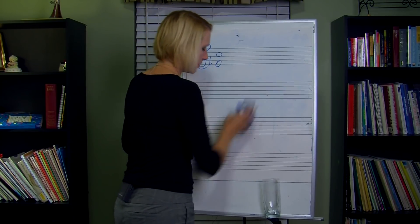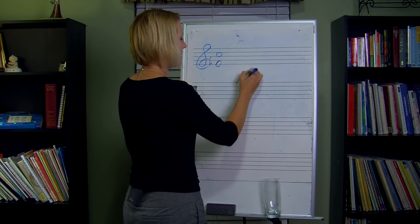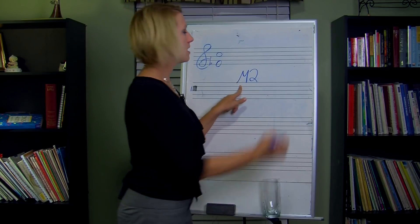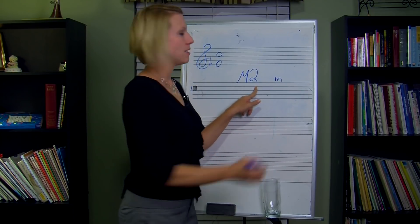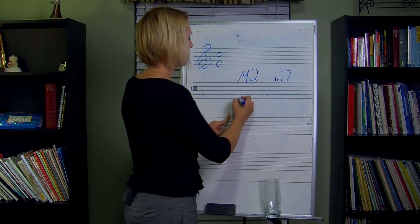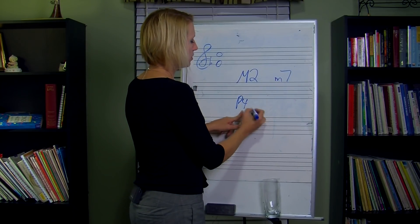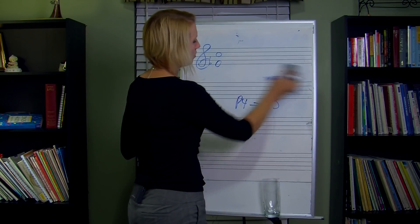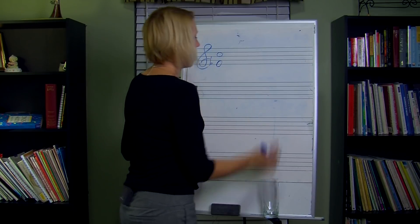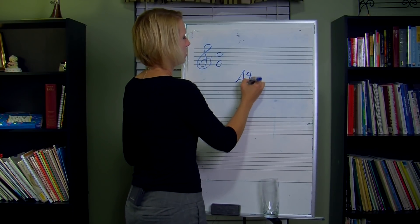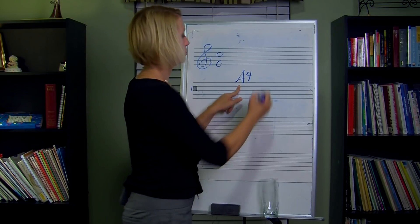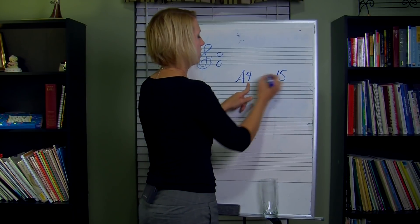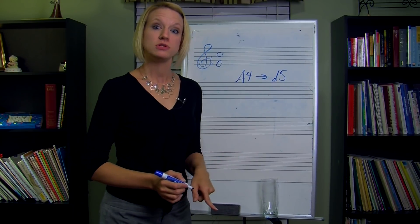Let's do a couple more together. Let's do a major second — what would a major second go to? Major would become minor, and a second would become a seventh. What would a perfect fourth go to? We already did that on the board — a perfect fourth would go to a perfect fifth. How about an augmented fourth? Remember, augmented inverts to diminished, and a fourth always inverts to a fifth. So an augmented fourth inverts to a diminished fifth.